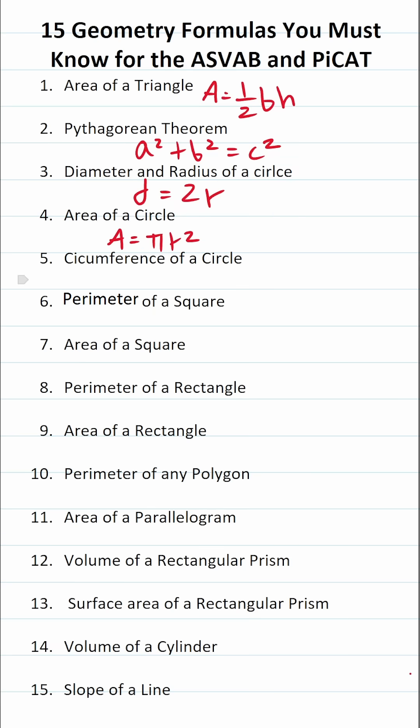For circumference of a circle, you have to know that there are two formulas, notably pi times diameter or circumference is 2 pi r.